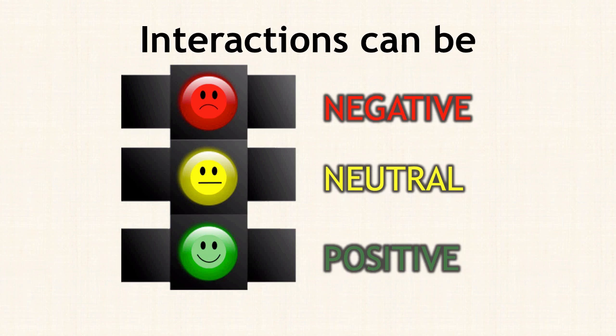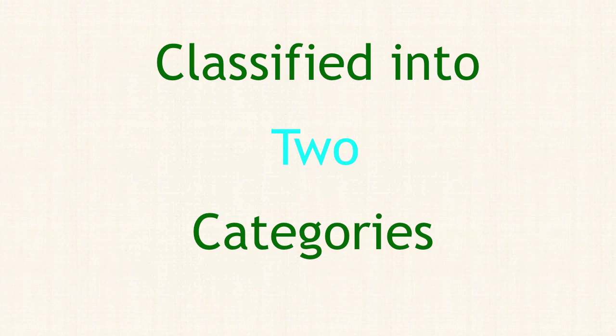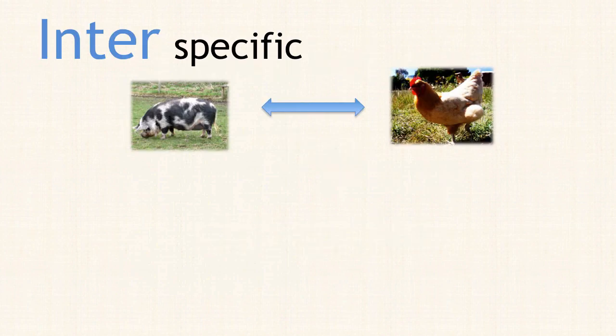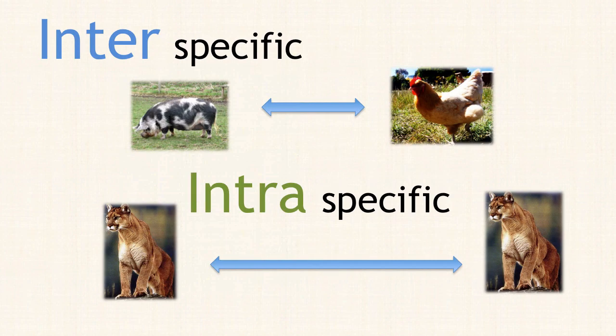Ecological interactions are classified into two categories: either inter-specific or intra-specific.